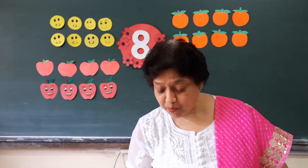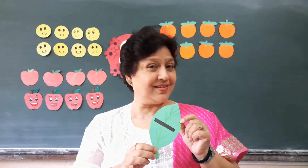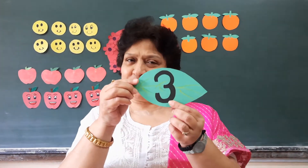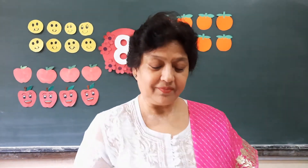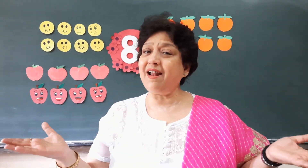Okay, now what does ma'am have? What is this? Leaf — green, green leaf. You have done green color and L for leaf, so this is a leaf. One, two, three, four, five, six, seven, eight. We have counted eight.